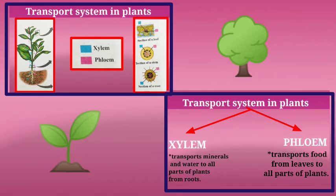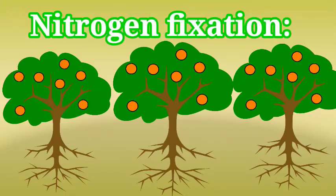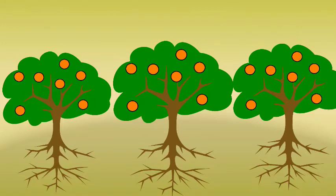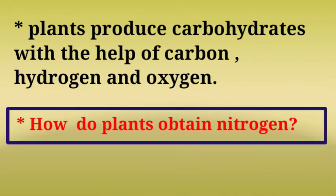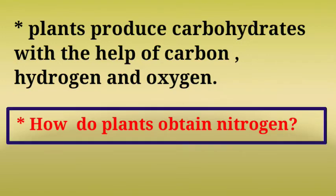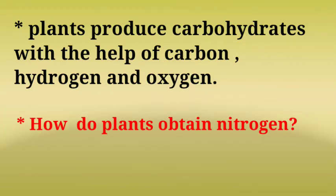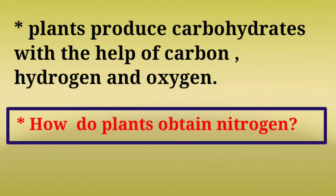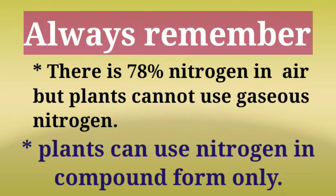Plants do not have a separate digestive and excretory system. Another important topic is nitrogen fixation. Plants produce carbohydrates by photosynthesis, but carbohydrates are made up of carbon, hydrogen, and oxygen. To synthesize proteins, plants require nitrogen. Although air contains gaseous nitrogen, plants cannot utilize it directly — plants can only utilize nitrogen in compound forms.